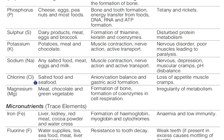Chlorine is found in salted foods and seafood. It is very important for the formation of gastric acid — HCl (hydrochloric acid) — which is present in the stomach. Deficiency leads to loss of appetite.